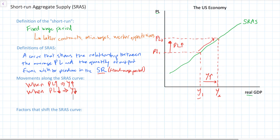Why is this the case? The answer has to do with what we call sticky wages. Sticky is just another word for fixed wages. Because wages are sticky — in other words they're not able to change quickly in response to changes in the price level — firms have no other option when prices fall than to reduce the amount of output they produce and reduce the number of workers that they employ.